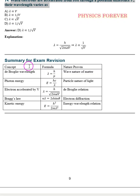So some of the important formulas we have to give in point of exam revision. Then de Broglie wavelength: lambda is equal to h by p. That is wave nature of matter. Then photon energy: E is equal to hc by lambda. Then electron accelerated by potential.